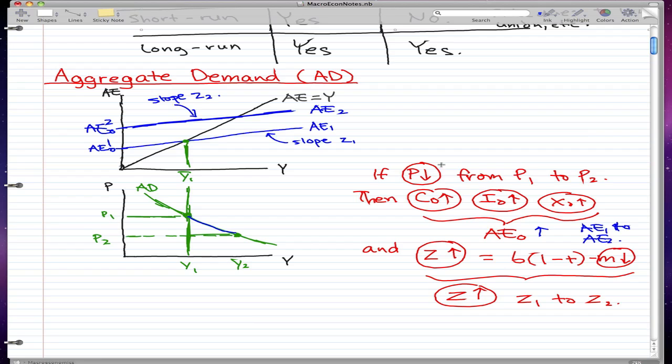If the price for some good falls from P1 to P2... let's imagine that this good is actually the whole economy. If the price level of the whole economy fell, then assuming that our income is still the same, we could spend more. Our consumption, our investment, our exports would rise.